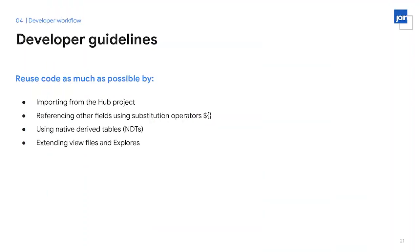Reusability is also key. We encourage utilizing Looker's Extends functionality to import from the hub project, especially for fields already defined elsewhere. Along with Extends, referencing other fields using Looker substitution operators — rather than referencing the underlying column directly — makes for a much better developer experience, as the logic only needs to be updated once and cascades to all fields that reference it. Native derived tables can also be very useful if the developer is looking to reuse joins or logic already defined in LookML.